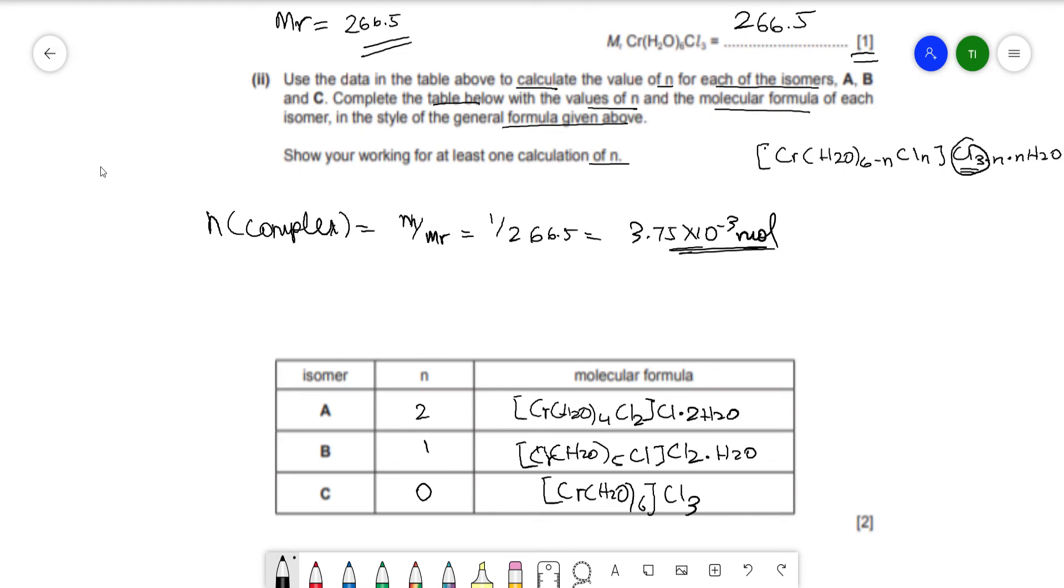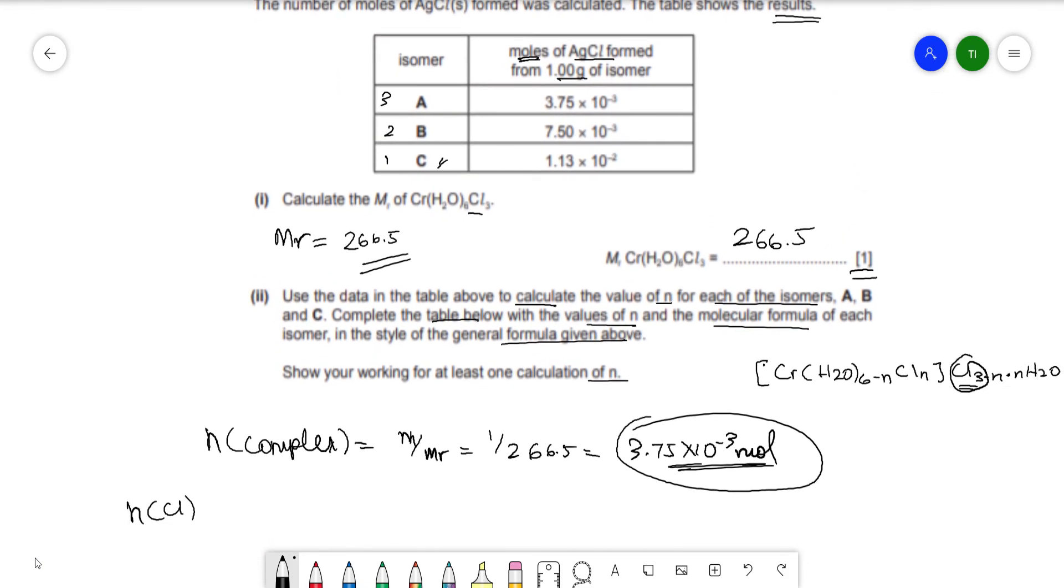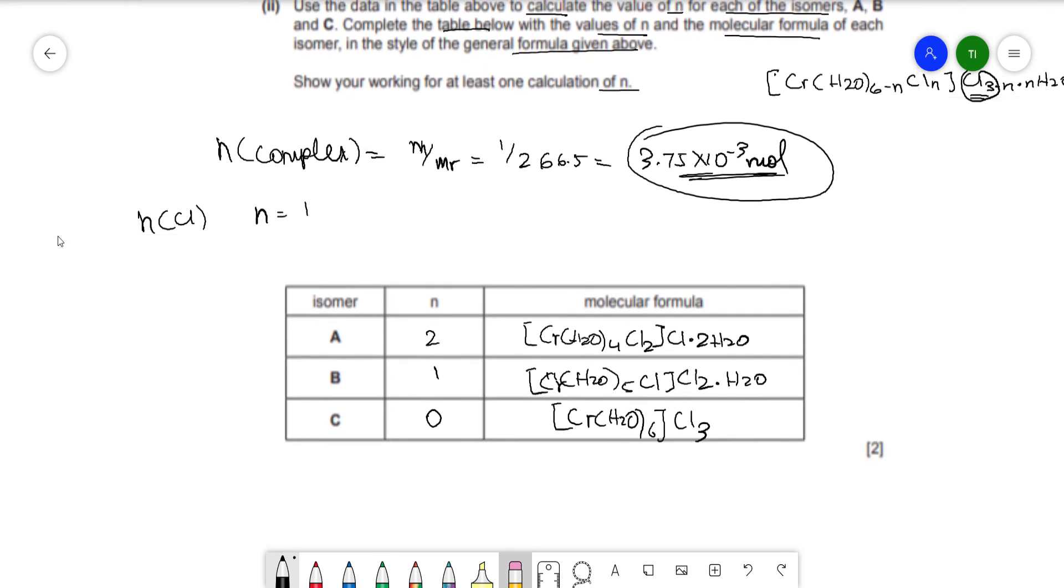So these are the moles of the complex. Now, the way to find the N value of Cl would be dividing the moles of AgCl formed by this value. So when you divide the moles of the first one, which is 3.75, by 3.75, so N would be 1. So when you divide it by itself, N would be 1. The ratio would be 3.75 × 10⁻³ divided by 3.75 × 10⁻³ is equal to 1. And what this basically means is that there's one Cl atom that's on the outside. One Cl atom that's on the outside if the moles is 3.75.